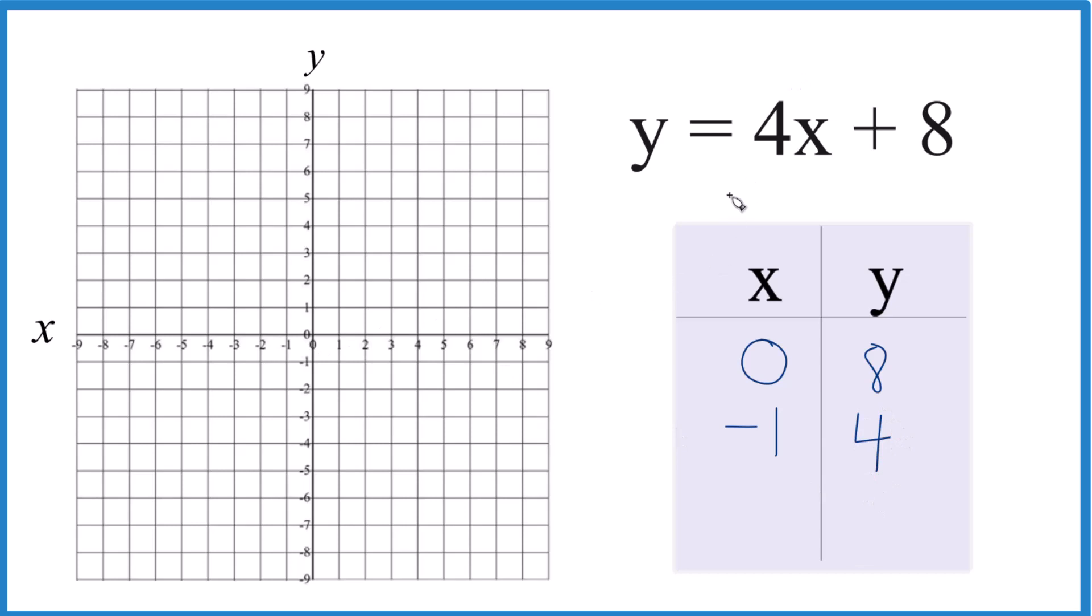And then I think I'm going to try negative 2, because I know 4 times negative 2, that's negative 8 plus 8. That would give me 0. That's kind of nice.